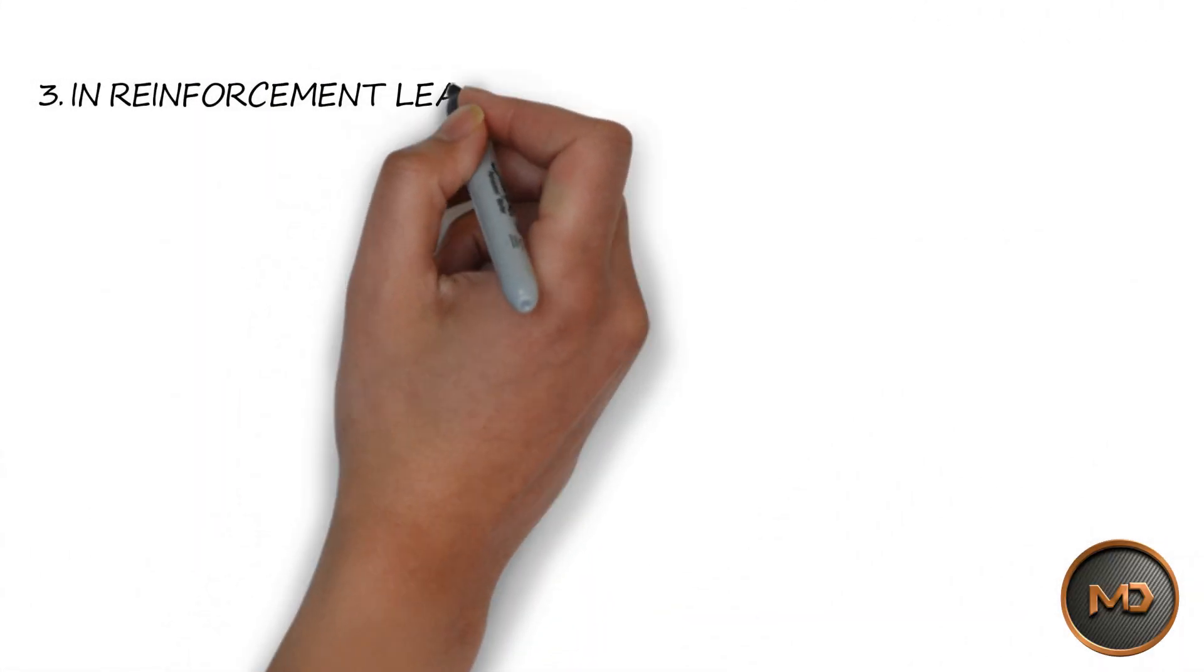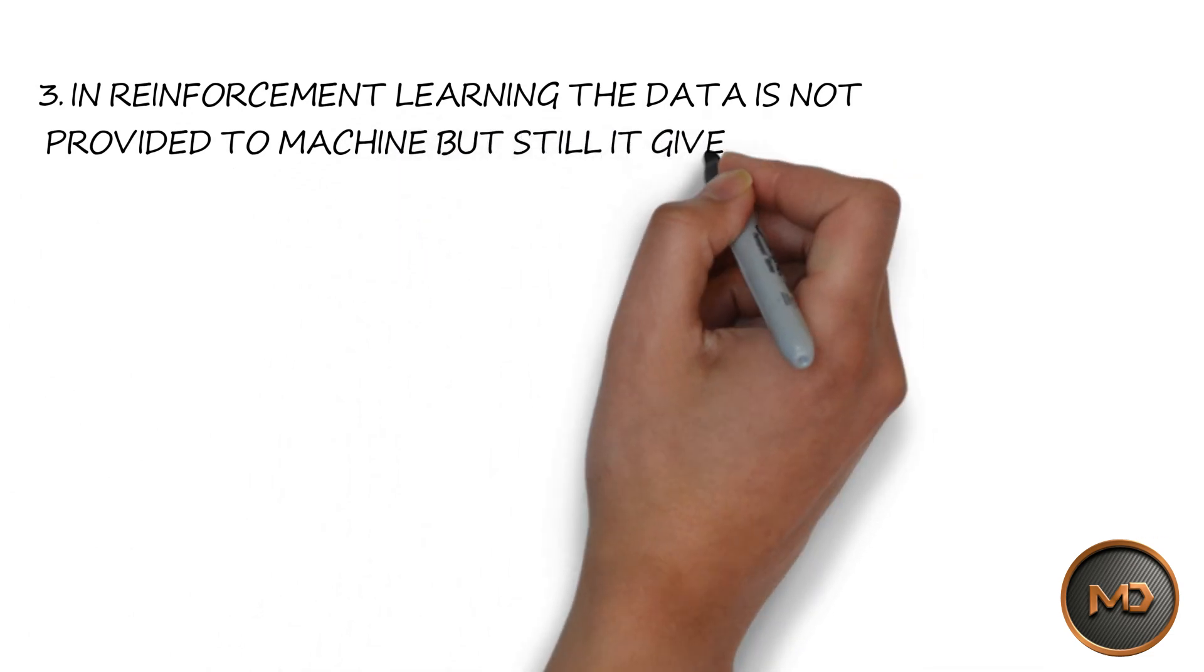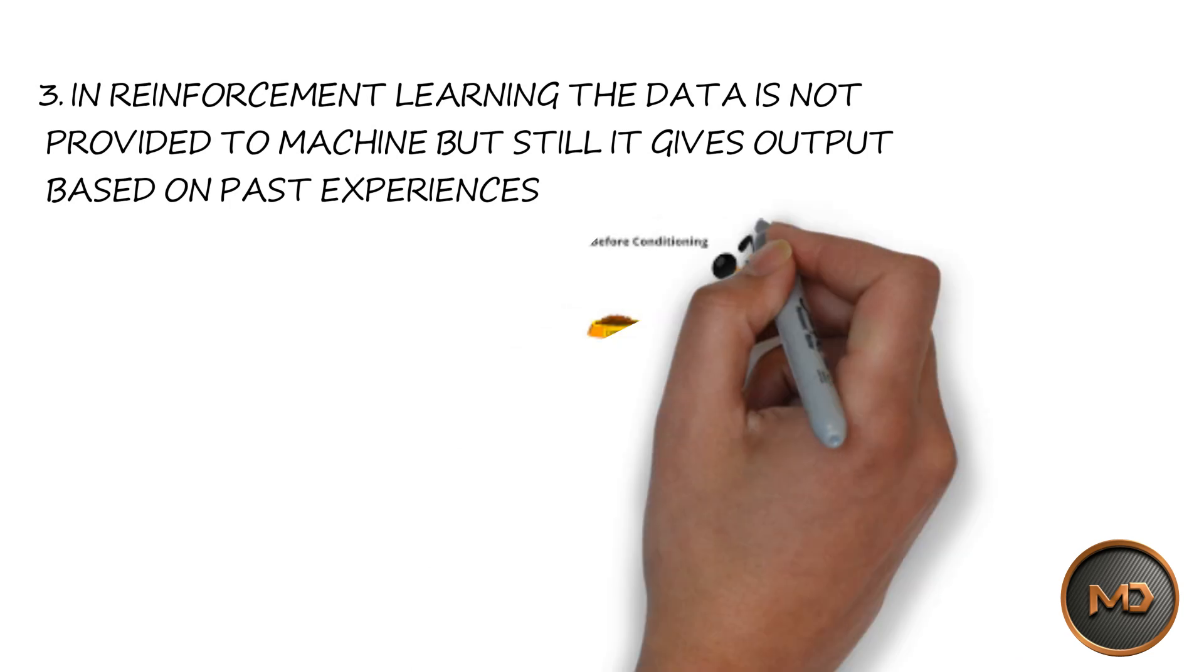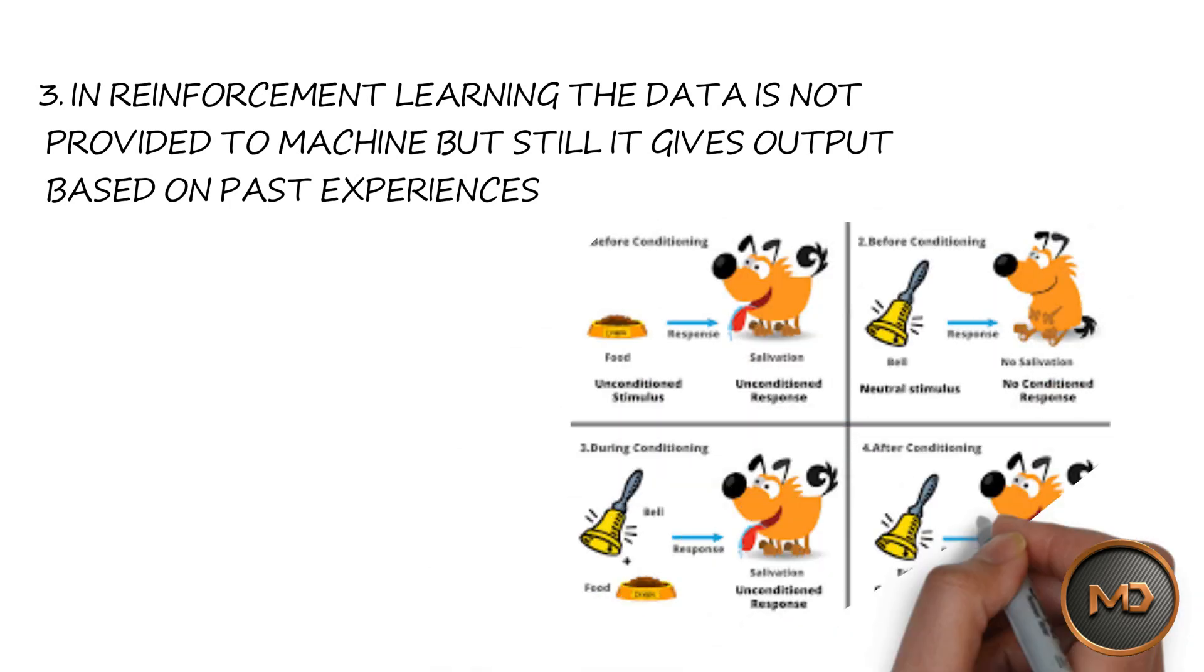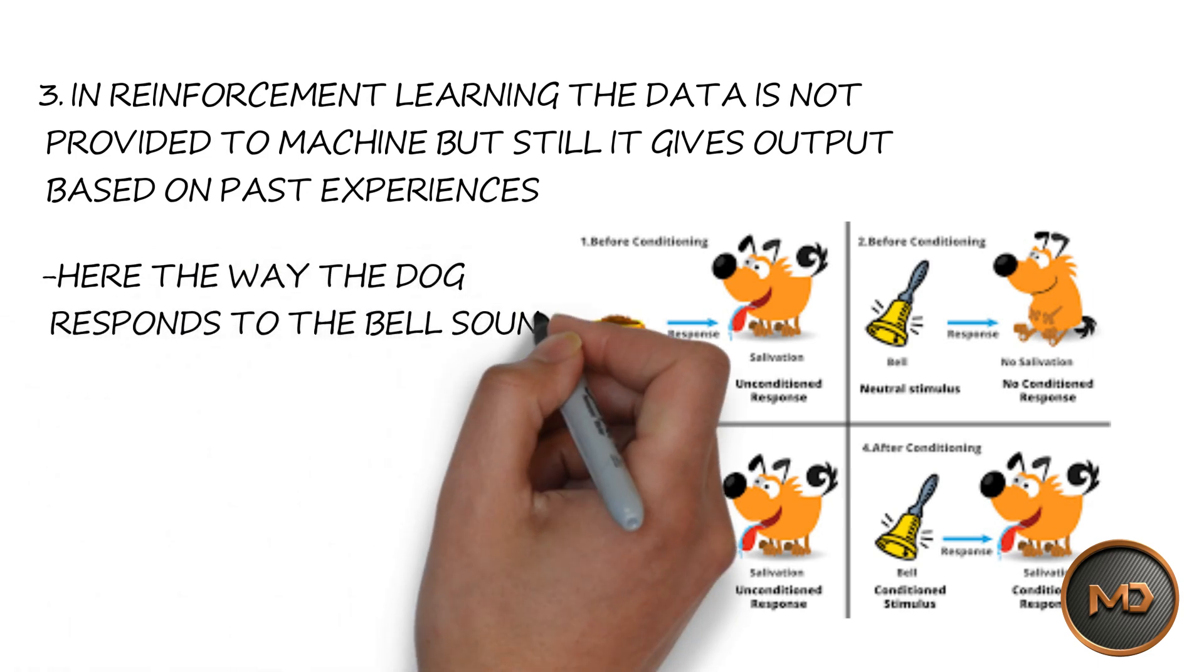In reinforcement learning the data is not at all provided to the machine, but still it gives the output based on past experiences. Here the way the dog responds to the bell sound in the presence of food and in the absence of food can be the best example for this.